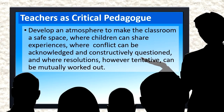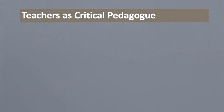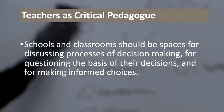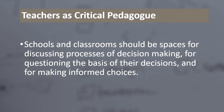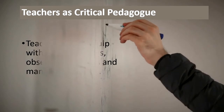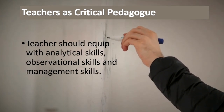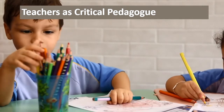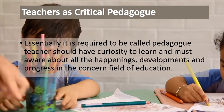If you behave as a critical pedagogue, it is expected that you will develop an atmosphere making the classroom a safe space where students can share experiences, where conflicts can be acknowledged and constructively questioned, and where resolutions may be tentative and mutually negotiated. Sharing of ideas, constructive questioning, and acknowledging conflicts are characteristics of a critical classroom. Your school and classroom should be a space for discussing decision-making processes and questioning the basis of decisions — an important skill in science education.